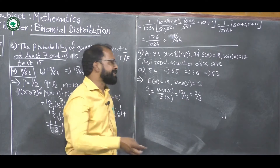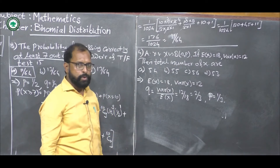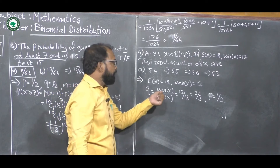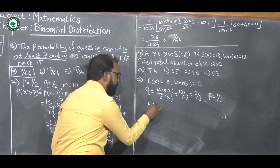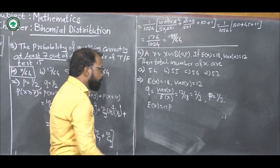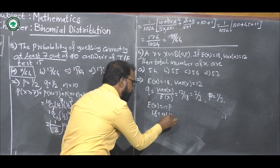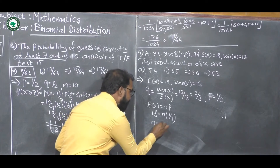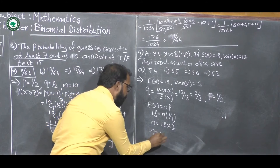So Q equals 2/3. By the property P + Q = 1, we get P equals 1/3. Now to find N, we use the expected value formula: E(X) = NP. Substituting, 18 = N × (1/3), so N = 18 × 3 = 54.